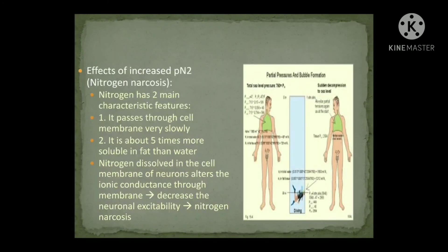The effects due to increased partial pressure of nitrogen are manifested as nitrogen narcosis. Nitrogen has two characteristic features: it passes through cell membranes very slowly, and it is five times more soluble in fat than in water. Nitrogen dissolves in the cell membranes of neurons and alters ion conductance, thereby reducing neuronal excitability, resulting in nitrogen narcosis.